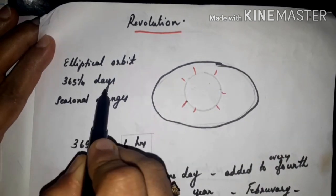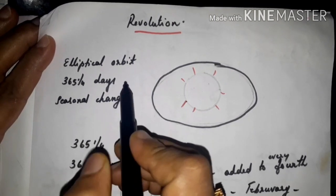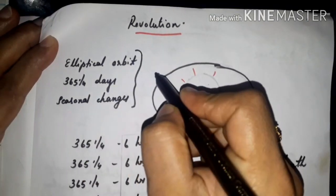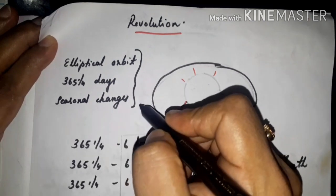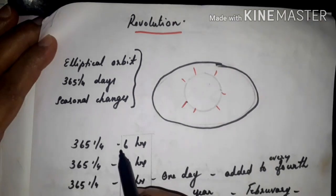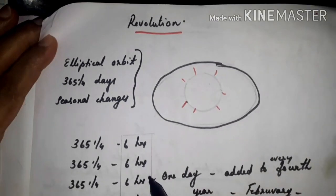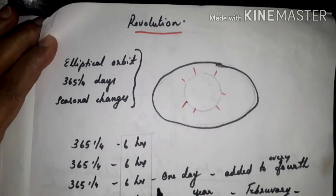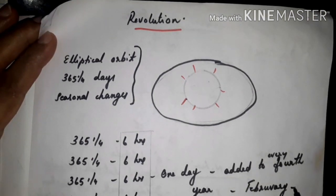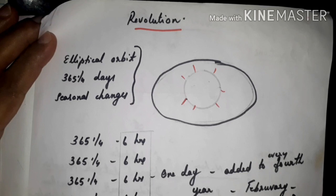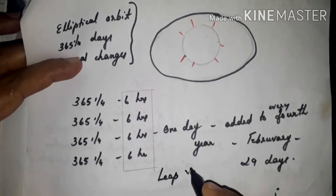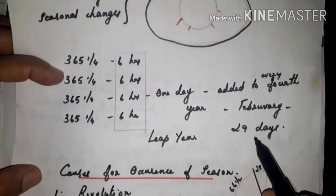Earth takes 365 one by four days to complete one revolution. It causes seasonal changes. If this is a three mark question, these points are enough: what is revolution, time taken, what is the effect. Now Earth takes 365 one by four days, that means six hours, to complete one revolution. After four years, this extra one day is added to the fourth year. This day is added to the month of February. So the year in which February have 29 days is known as leap year.